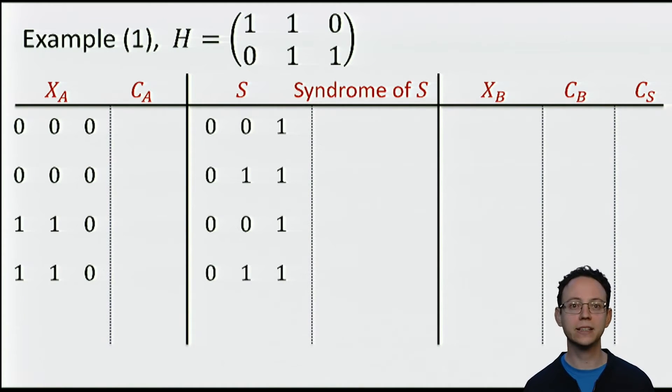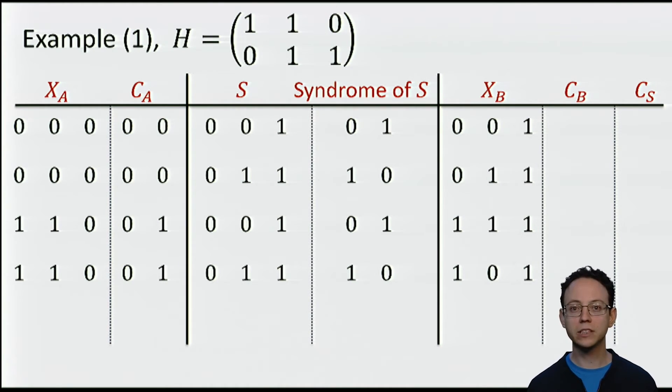Now, let us get some intuition into the different elements in the decoder by continuing with the previous example. Let's consider two values for the string of Alice XA, for instance 000 and 110. An easy matrix multiplication gives us that their syndromes are 00 and 01. Let us also consider two arbitrary error strings S, for instance 001 and 011. We can also compute the syndrome of the error strings which are 01 and 10. We can now also compute the strings of Bob XB which are summing XA plus S and we get 001, 011, 111, and 101. Now, the syndromes of XB which are 01, 10, 00 and 11. And finally, CS which is obtained by summing CA and CB. And voila! We obtain 01, 10, 01, 10. Exactly equal as the syndrome of S.